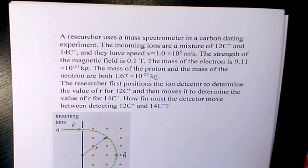The mass of a proton and neutron are both 1.67 × 10^-27 kg. The researcher first positions the ion detector to determine the value of r for C12+, then moves it to determine r for C14+. How far must the detector move between detecting C12+ and C14+?